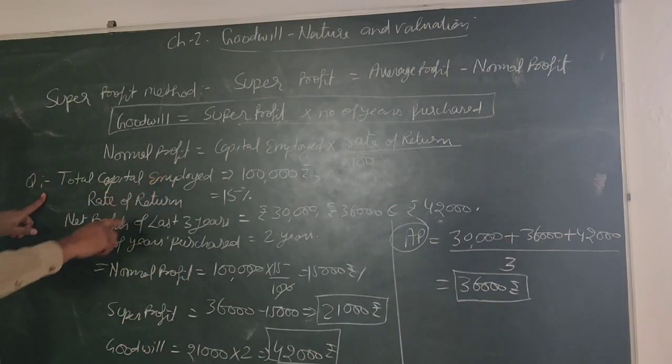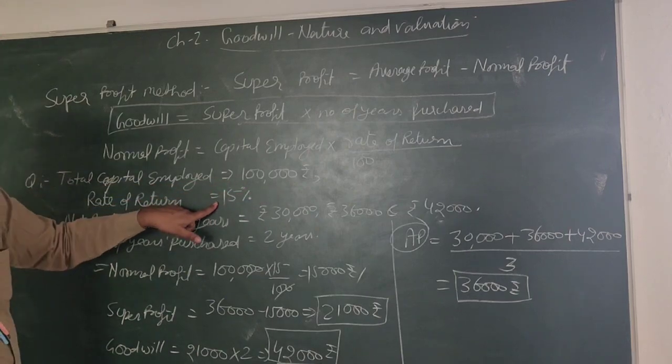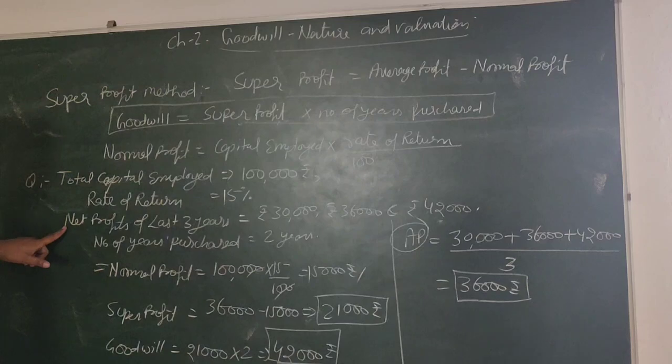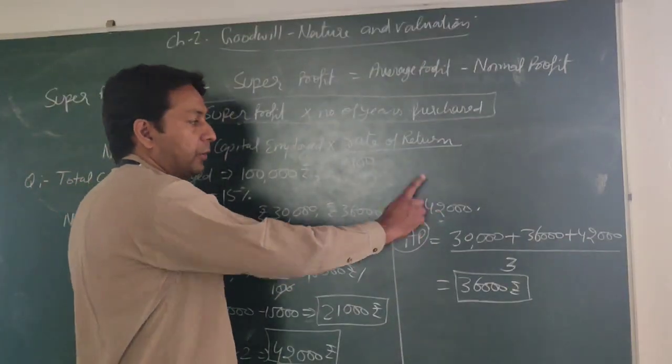Total capital employed in a firm is given, i.e. Rs. 1,00,000. Rate of return is 15%. Net profit of last 3 years is given: 30,000, 36,000 and 42,000.